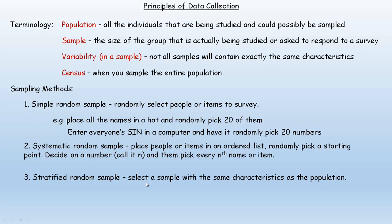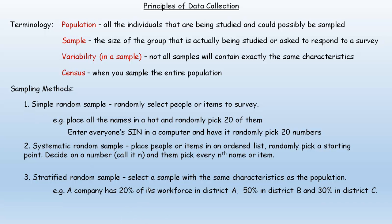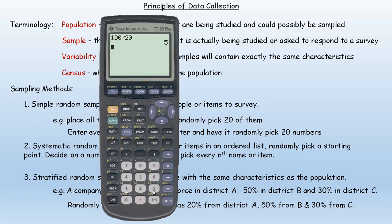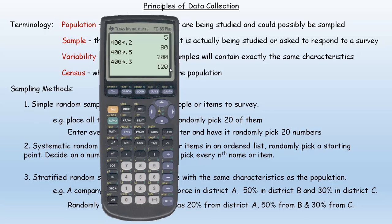A stratified random sample is where you select a sample with the same characteristics as the population. For example, if a company has 20% of its workforce in District A, 50% in District B, and 30% in District C, you design your sample to match those proportions. For a sample of 400, that means 400 × 0.2 = 80 from District A, 400 × 0.5 = 200 from District B, and 400 × 0.3 = 120 from District C, giving 400 total — representative of the population.